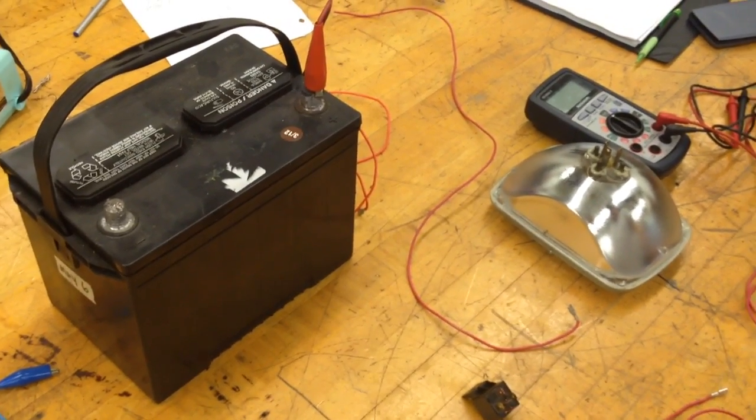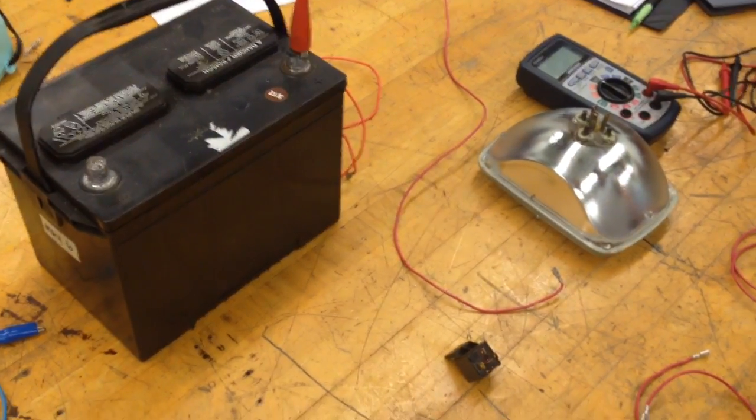Today we're demonstrating how to connect a headlight with a 5-pin relay to a battery to operate it on high and low beam with a switch.